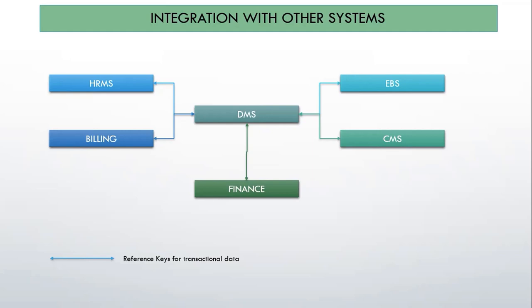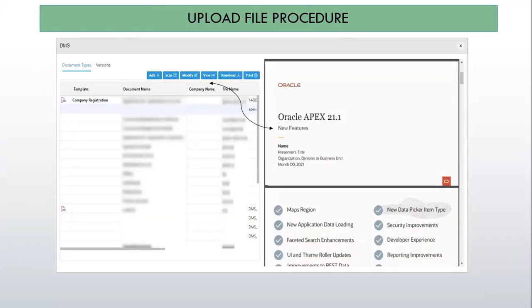We are also saving some transaction values to keep the record as a reference of our DMS file which was uploaded in directories. So the same DMS system is being used by EBS, CMS, Finance System, Billing, and HRMS. But for each system, the reference key values are different — from EBS the reference value is different, for CMS it is different, for HRMS different, and billing is different. After uploading a file with a reference value, we can trace it out.